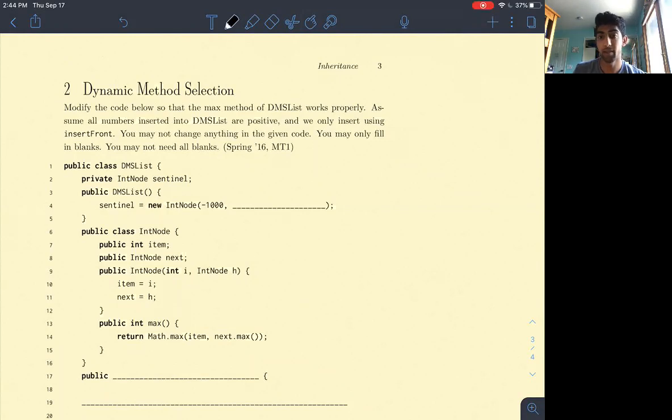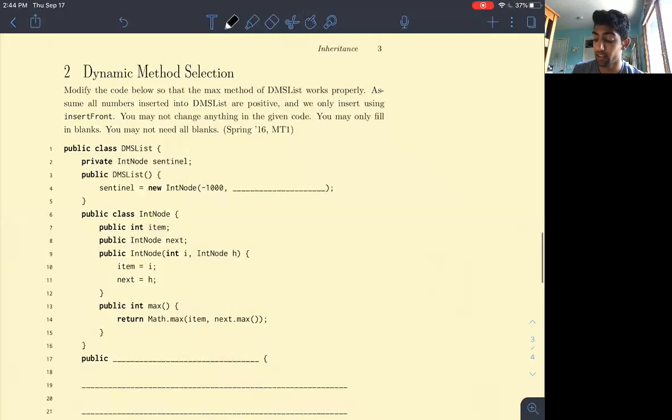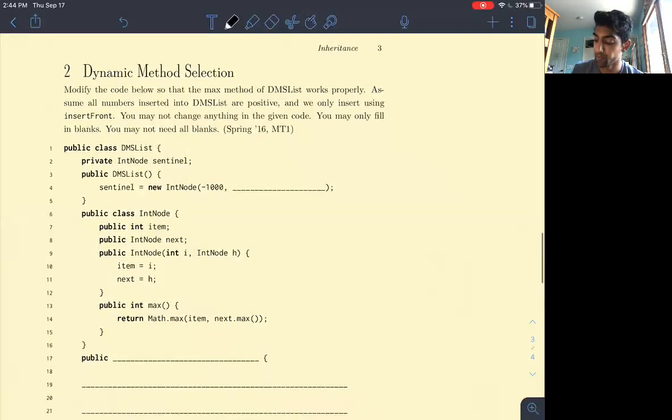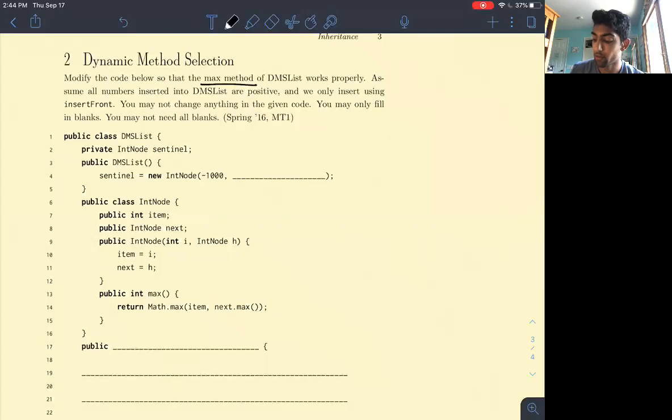We're going to be walking through dynamic method selection problem 2 first. It states modify the code below such that the max method of the DMS list works properly. Assume all numbers inserted into the DMS list are positive and we only insert using insert front. You may not change anything in the given code.